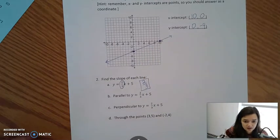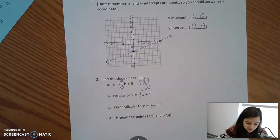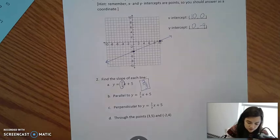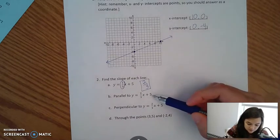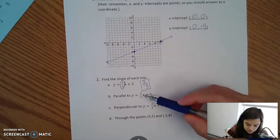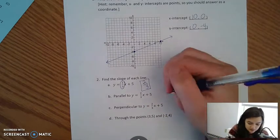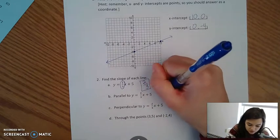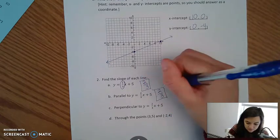To find the slope of the line parallel to the same line, y equals 2/3 x plus 5, well, parallel lines have the same slope. So if y equals 2/3 x plus 5 has a slope of 2/3, then our parallel line also has a slope of 2/3.